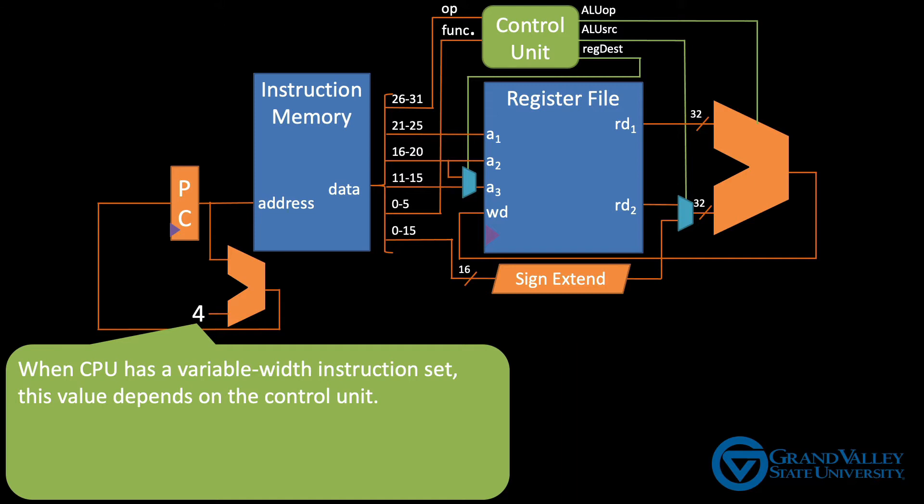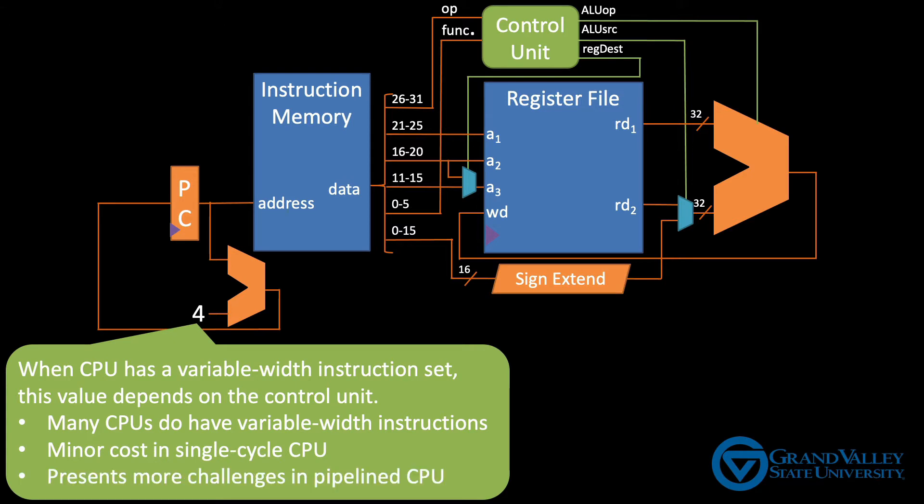This isn't by any means a deal breaker. After all, many CPUs, including Intel x86 CPUs, have a variable width instruction set. But MIPS decided against it. This dependency on the control unit is a minor issue in the single cycle CPU, but can hinder the performance of a pipeline CPU, which we'll discuss later in the semester.